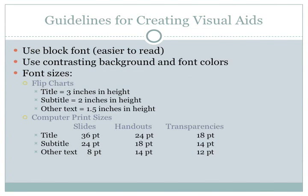Some guidelines for creating a visual aid. First, you'll want to use block fonts such as Arial or Times New Roman — they're easier to read than fancy fonts. Use contrasting background and font colors. For example, you would not want to use bright green as the background color and bright yellow as the font color, because the font wouldn't have enough contrast and it would make it hard to see. You would also want to use background and font colors that tend to be pleasing to the eye.